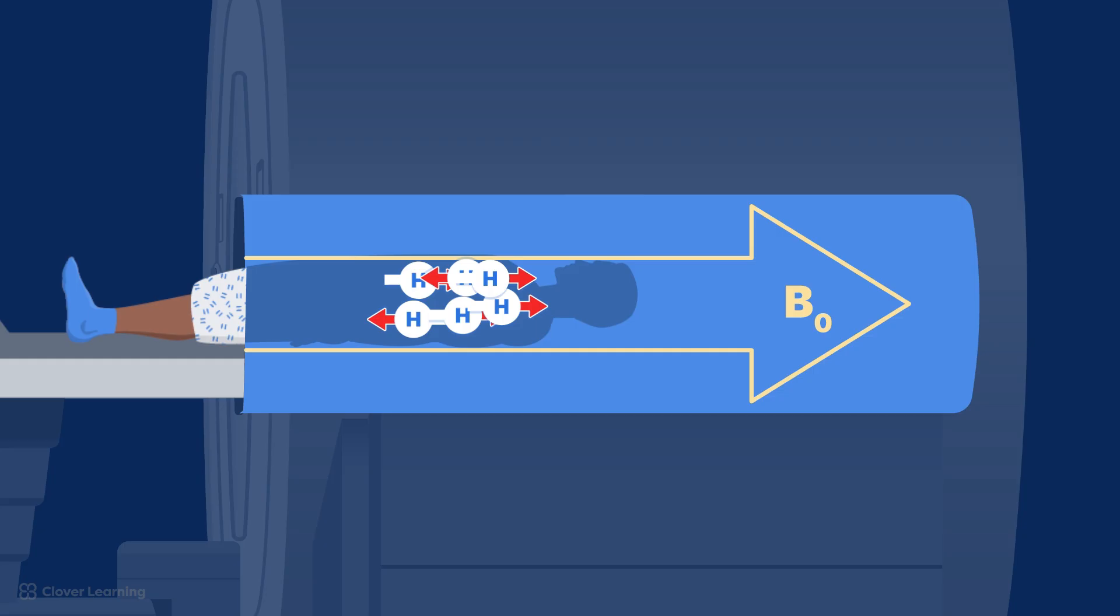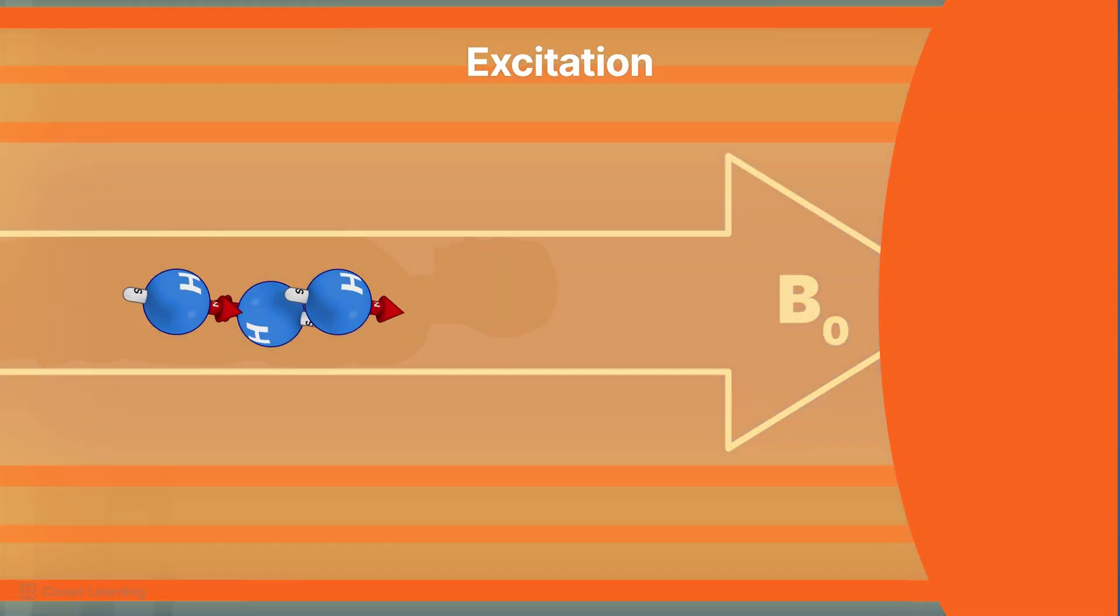Then, the technologist sends a radio frequency or RF pulse at the Larmor frequency of hydrogen into the body. The RF energy is absorbed through a process called excitation and causes resonance to occur in the body's hydrogen nuclei.